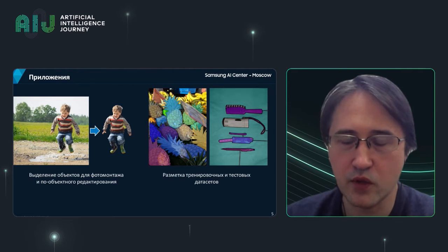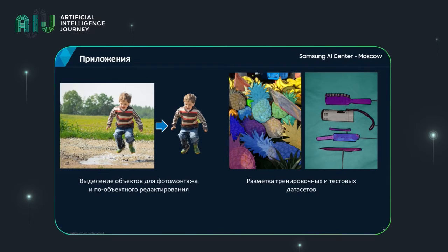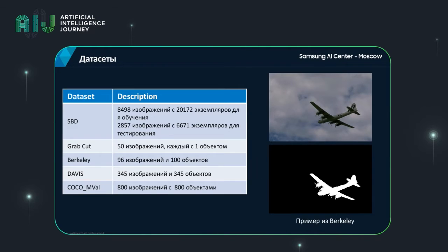The quality of the algorithm depends a lot on the accuracy of selecting instances in the image. Such datasets are annotated by operators using interactive instance segmentation tools. Here we show just two examples from the image stock. The actual models are tested on several popular datasets which were specifically designed for this purpose.